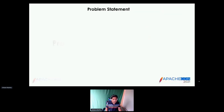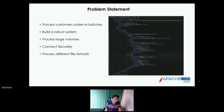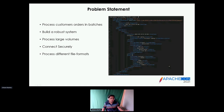Let's get started with the problem statement. What we want to build is a system that can process customer orders coming in batches. When I say orders, it could be a shopping cart order, a corporate order, or a batch of payments done on Amazon or any portal. Corporate orders could be like placing orders for laptops, desktops, or servers in bulk. This is how a sample payload looks like — I have a batch order at a high level with multiple orders.